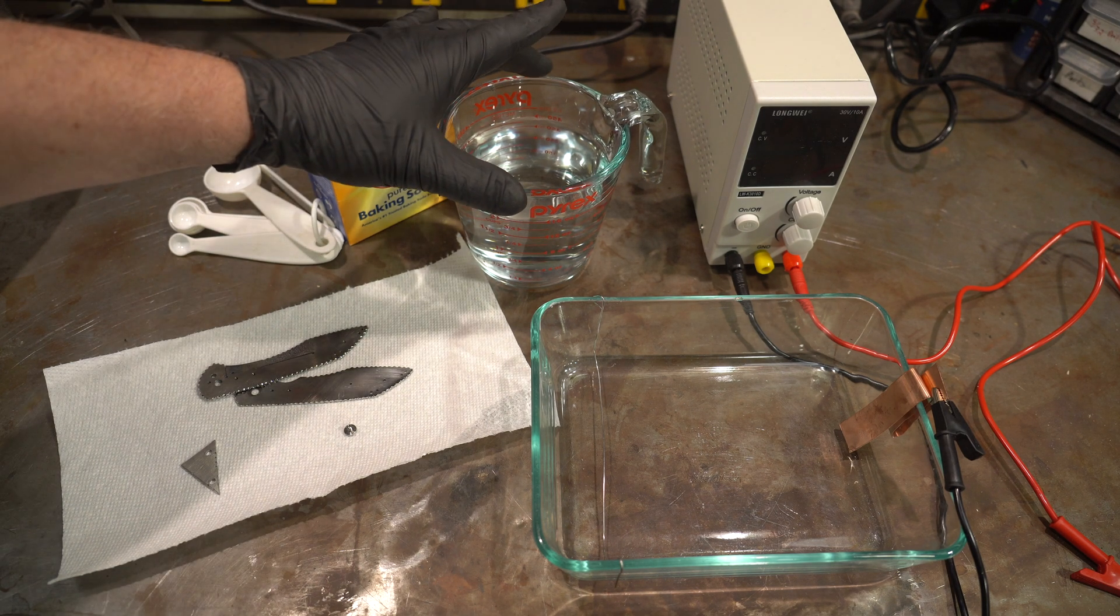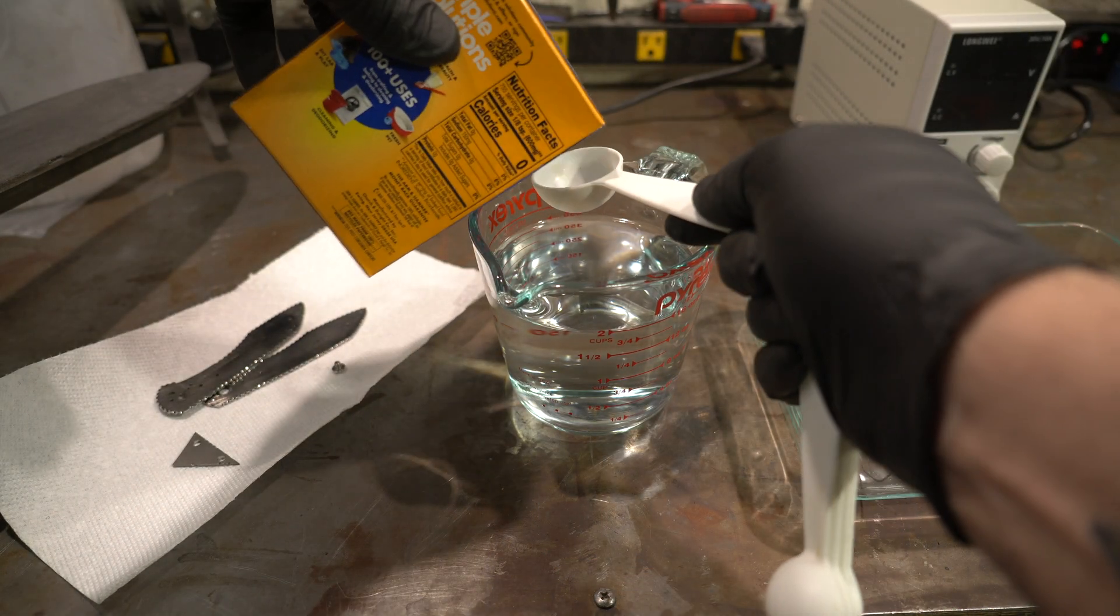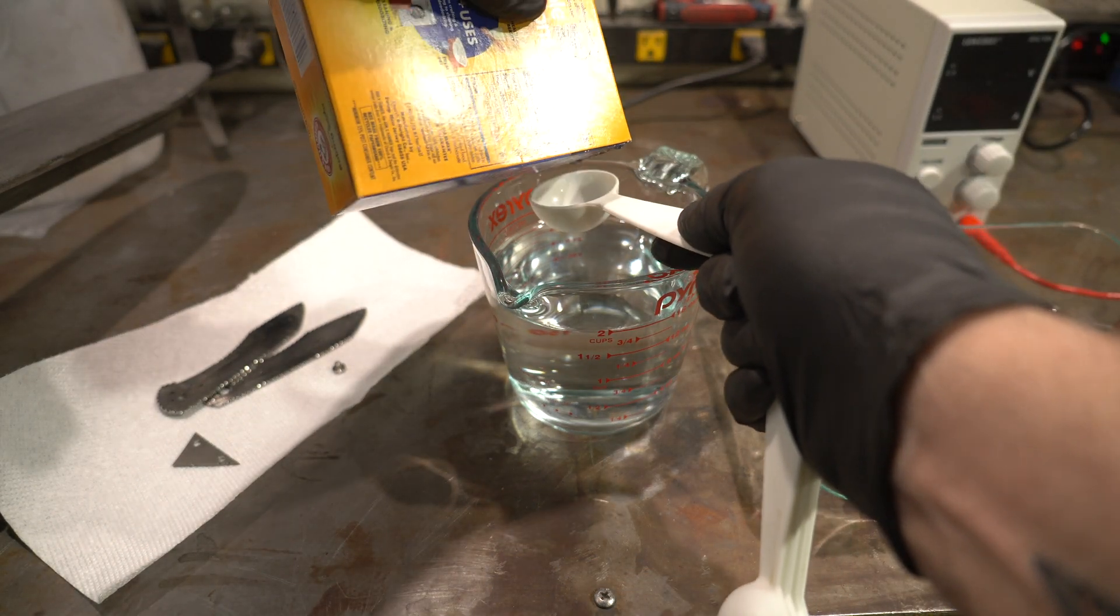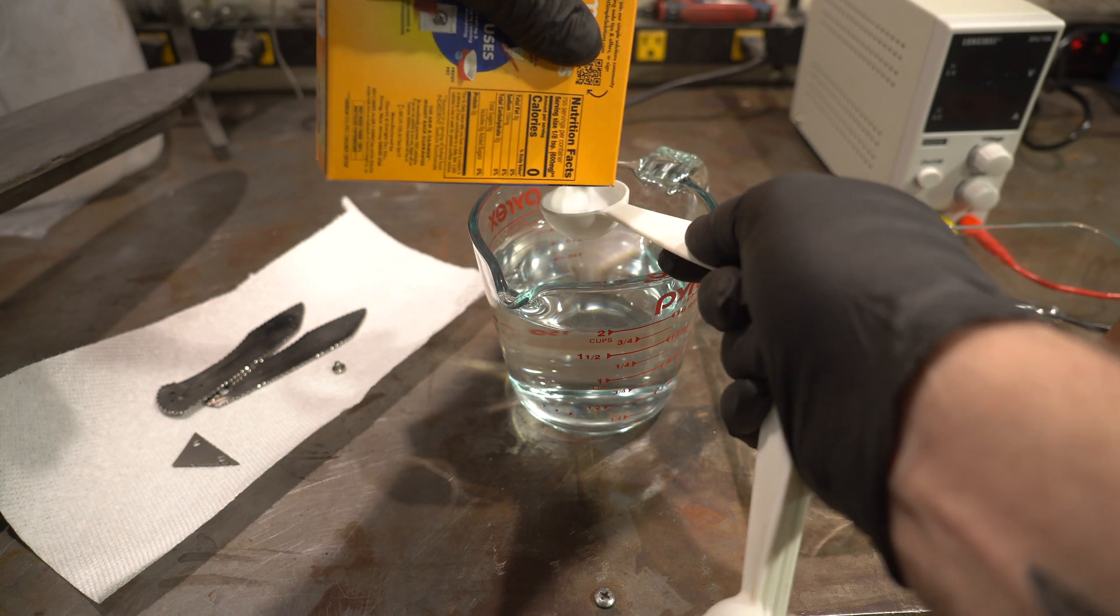First thing we're going to do is mix our solution. So I've got two cups of distilled water. I'm going to mix two tablespoons of baking soda, and we're going to let that mix until it fully dissolves and goes back to clear.